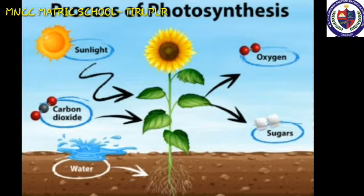During this process, oxygen is released as a by-product. So green plants are called autotrophs. Photosynthesis occurs in green parts of the plant such as leaves, stems, and floral buds.